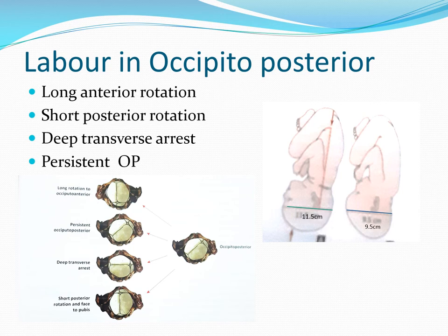In occipito-posterior position, the occiput has to travel from the posterior quadrant all the way anteriorly — it has to rotate about 135 degrees. If the head is well flexed, the occiput will touch the pelvic floor first, then slowly rotate anteriorly, and in the majority of cases, deliver as occipito-anterior with a normal delivery. Only that it will take some more time to rotate, which may result in a prolonged second stage.